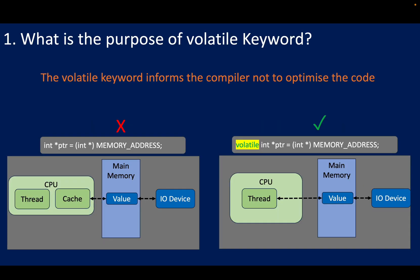The first question we are going to look at is: what is the purpose of the volatile keyword? The volatile keyword informs the compiler not to optimize the code. In a normal scenario, when we declare a variable, the compiler tries to optimize it — the variable is fetched into the cache, and the CPU thread keeps reading the value from this cache instead of going back to the main memory each time. But here is the issue: if the variable in main memory is actually mapped to an external device and the device updates the value directly, the compiler has no clue about it. The thread will still read the old cached value, and that is wrong.